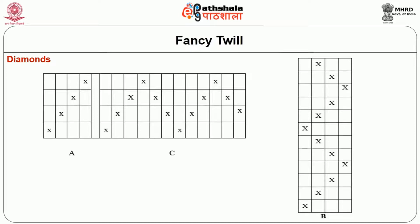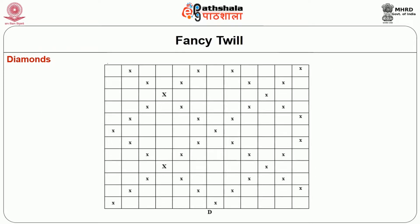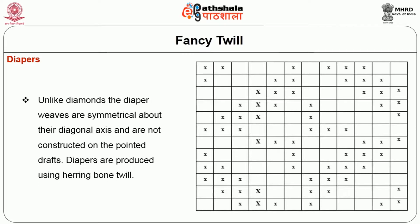If B is taken as the draft and C as the lifting plan, the diamond design D will result, repeating on 12 ends and 12 picks. Alternatively, if B is taken as the lifting plan and C as the draft, the resulting design is as depicted. Unlike diamonds, diaper weaves are symmetrical about the diagonal axis and are not constructed on pointed drafts. Diapers are produced using herringbone twills. A well-balanced diaper weave produced using a 3-up-3-down twill is shown in figure 1.5, repeating on 12 ends and 12 picks, with the weaves reciprocating along the diagonal line.